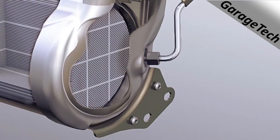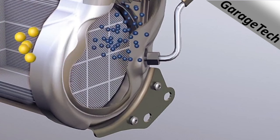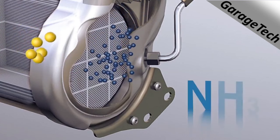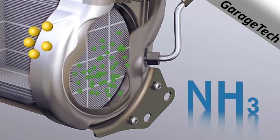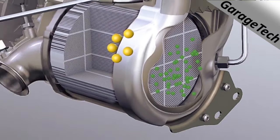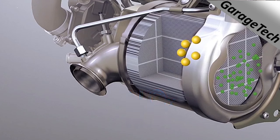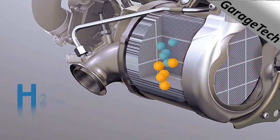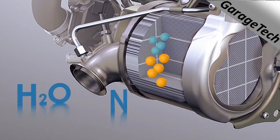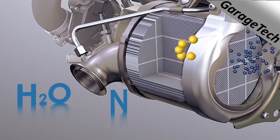The exhaust gas temperature causes the AdBlue to generate ammonia, NH3. The exhaust gas, now enriched with ammonia, is routed to the particulate filter with SCR, where the ammonia causes the nitrogen oxide to be separated into nitrogen and water.